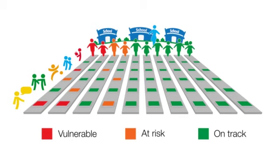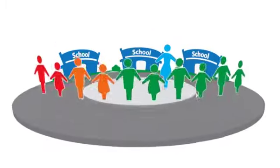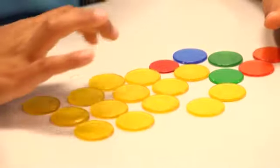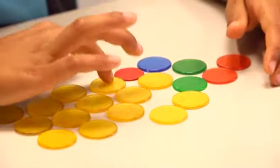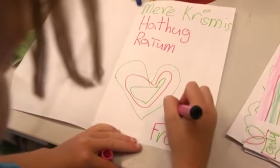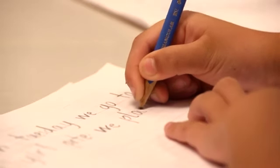The more domains on which a child is vulnerable, the greater the risk of later difficulties. Being vulnerable on just one domain is already putting children behind their peers. In Community A, two out of ten, or twenty percent, of children are vulnerable on one or more domains. Although we can use the AEDC to look at specific developmental vulnerabilities, it's important to consider children's overall development and that ideally children need to develop well in all areas.